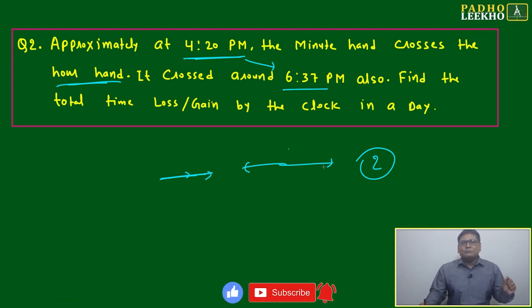Our purpose is to find the time between two consecutive crossings - not two times, but when they will cross the next time after 4:20 PM.